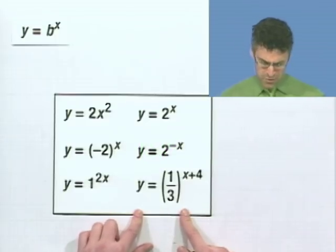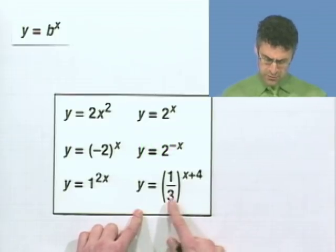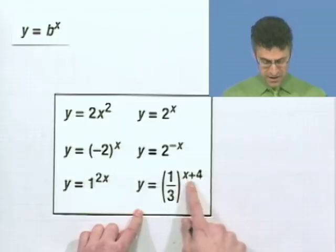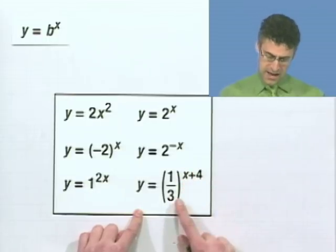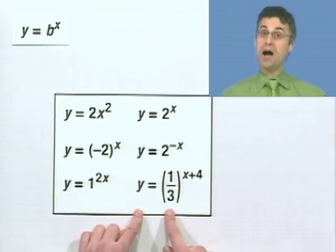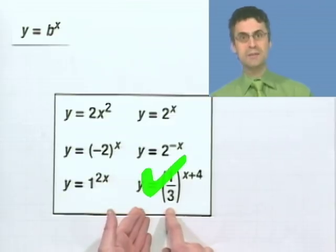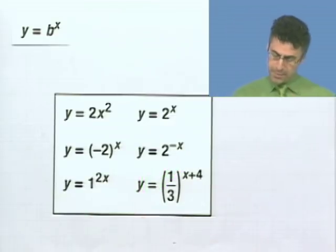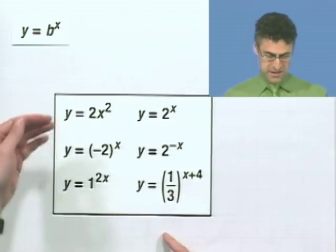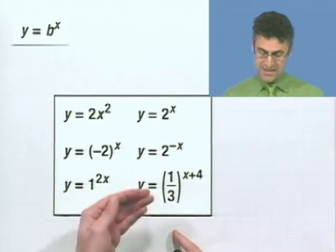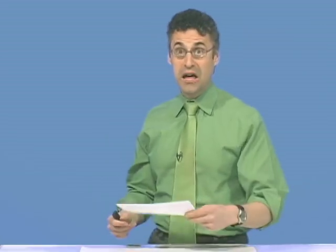And finally, what about this one? This is a crazy looking one. y equals 1/3 to the x plus 4. That's a variable exponent. And notice that the base is a positive number and it's not equal to 1. It can be less than 1. It can be a positive number less than 1, like a third, but it can't equal 1. So this is a no, and this is a yes. Excellent. I'm loving the exponential function. I hope you are too.